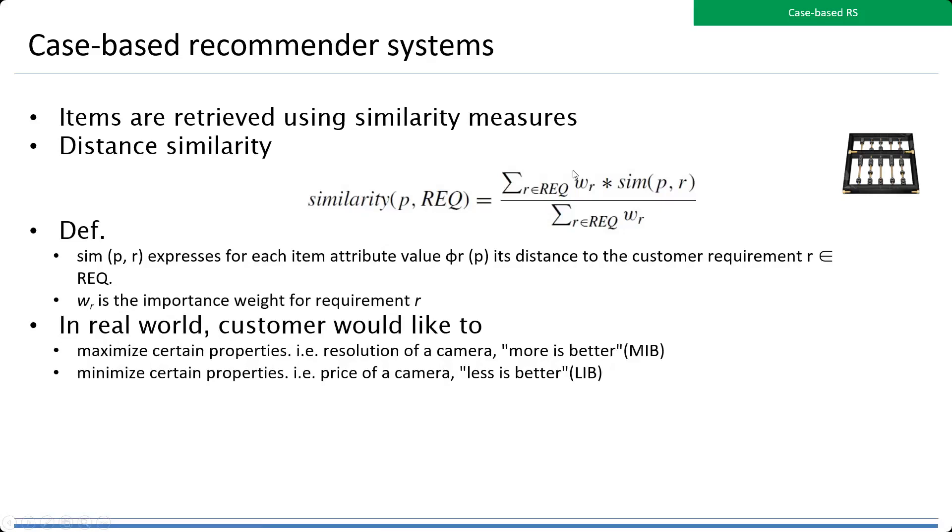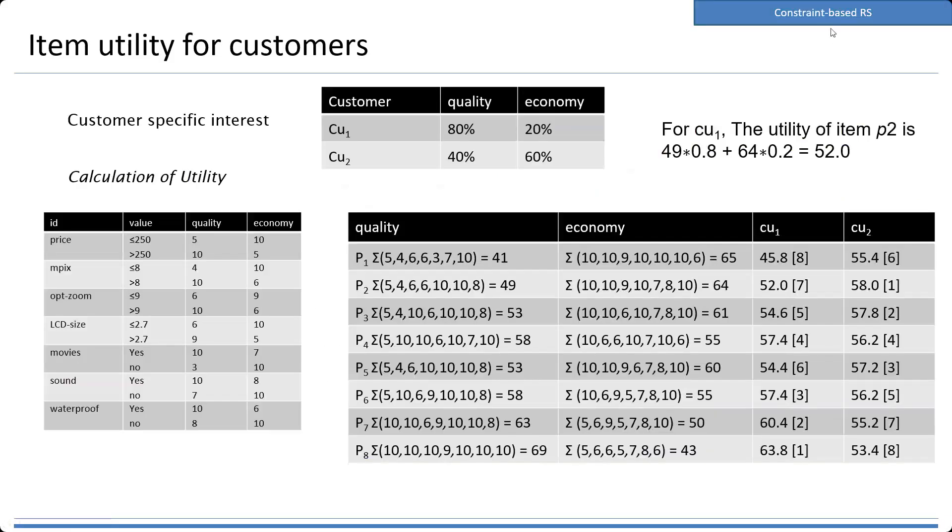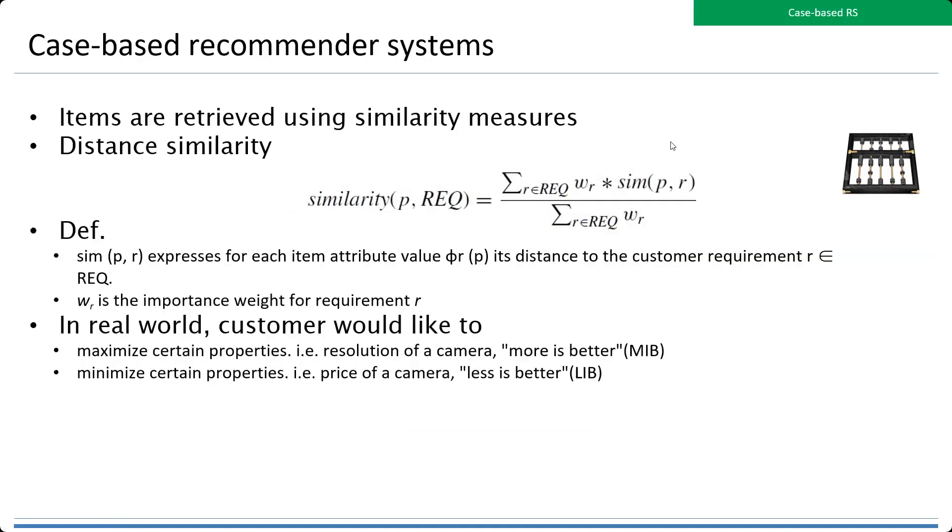Previously, we discussed the constraint-based recommendation system in the knowledge space. Now we are going to learn about the case-based recommendation system in the knowledge space. In the case space, it's like case-type-case, that's why we call it case-based.